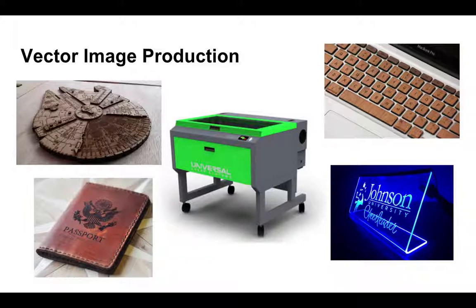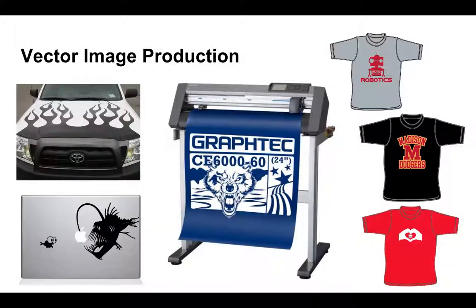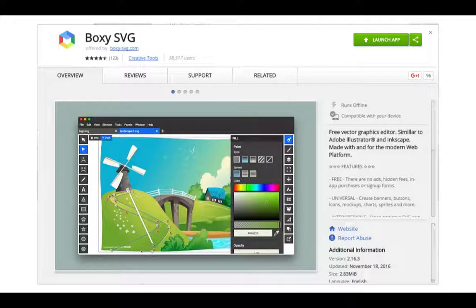CNC plotters can use vector designs to create decals, which can be used for adhesive stickers or heat transfer vinyl cuts, which can be used to make t-shirt laminates. If you want to get started with vector files, you should check out BoxySVG, which is a free app in the Chrome Web Store that's compatible with Mac, Windows, and Chromebooks, and allows you to create high-quality vector files that can be used with any piece of vector equipment.